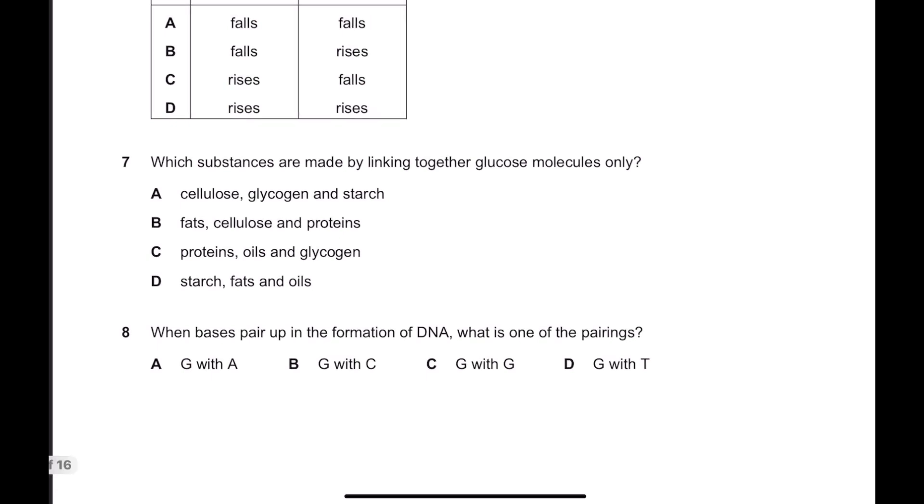Number seven, which substances are made by linking together glucose molecules only? So glucose is carbohydrate, and there are several carbohydrates that you should know. Carbohydrates are divided into three groups.